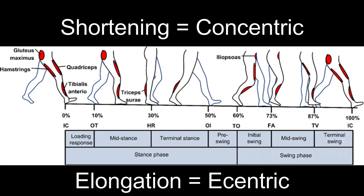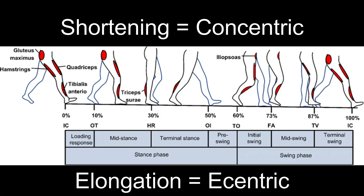Now if we discuss about the contraction of muscle at the transition periods of phases: at the first transition from initial contact to loading response, we can see a shortening of muscle — it means there is a concentric type of muscle contraction. Then in the second transition from mid-stance to terminal stance, we can see an elongation of muscle, meaning an eccentric muscle contraction is happening. At the third transition from pre-swing to initial swing, we can see the shortening of muscle — another concentric type of muscle contraction. At the last transition from mid-swing to terminal swing, we can see another elongation of muscle — another eccentric type of muscle contraction is happening.